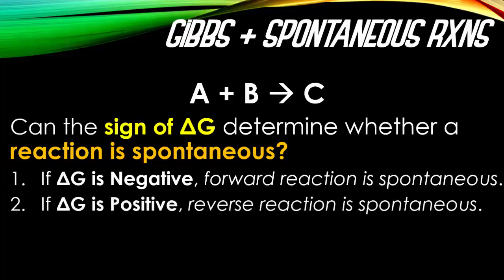However, if delta G is a positive number — like positive 1, positive 2, etc. — the reverse reaction is spontaneous. That means C will always decompose to give you B and A.